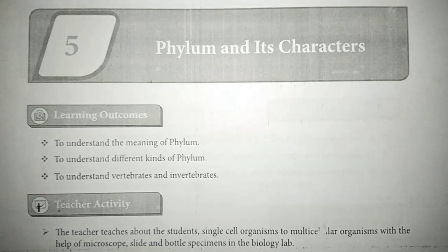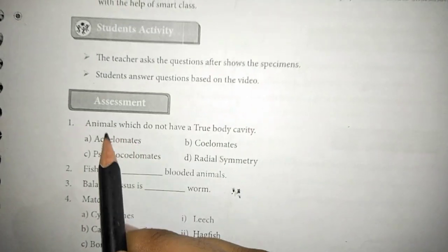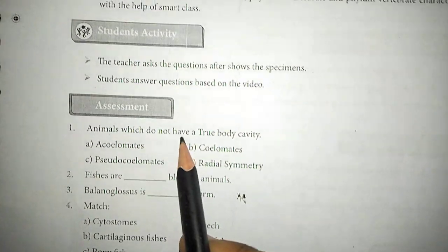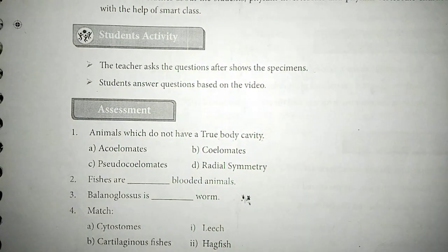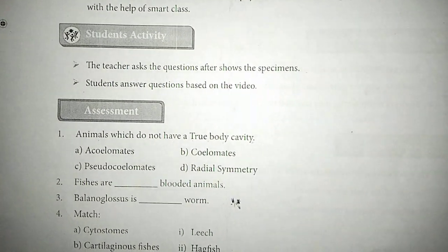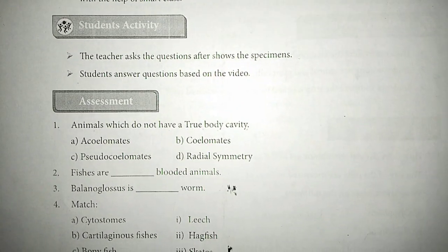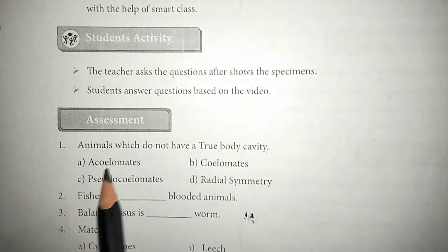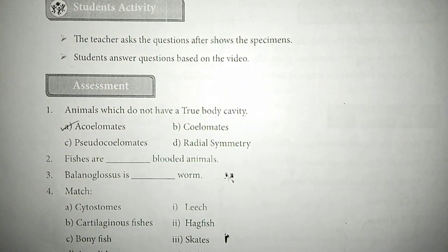Now the fifth lesson: animals which do not have a true body cavity — do not have a true body cavity. The answer is acoelomates. This is the answer.